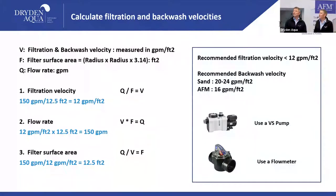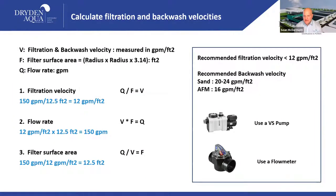Same thing goes for backwash. Our recommended filtration velocity is 12 gallons per minute or less per square foot. For backwash, sand should be backwashed at 20 to 24 gallons per minute per square foot to achieve 20% bed expansion — which is really what we need to get collected material out of the filter. With AFM, to achieve that same 20% bed expansion we need only 16 gallons per minute per square foot. To achieve these easily: use a flow meter, and to dial in the rate, use a variable speed pump or VFD drives on large commercial pumps.